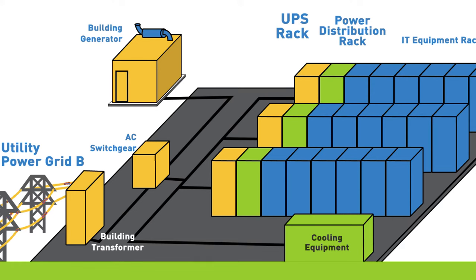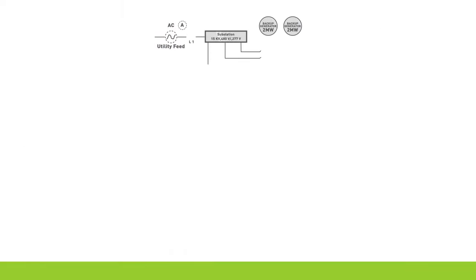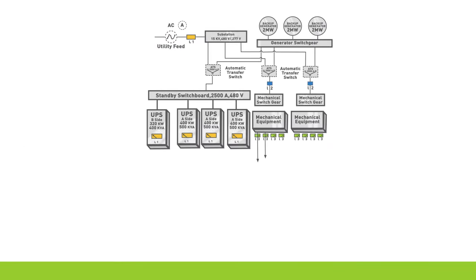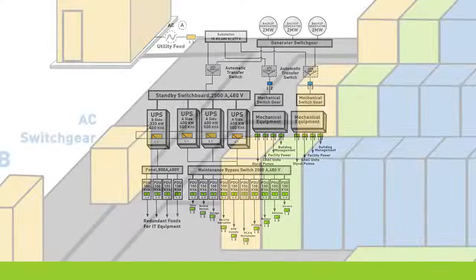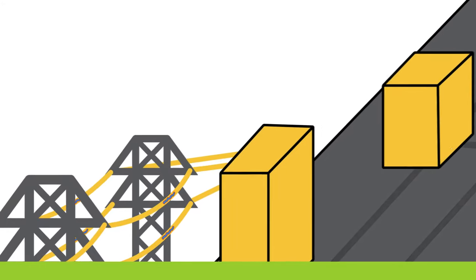A series of switches on both the utility feed and the generator feed are used to provide a level of redundancy for all the equipment in the data center. This seemingly complicated chart is actually a simplified view of what many data center schematics look like. Let's zoom in on this and take it piece by piece.